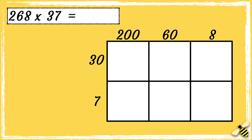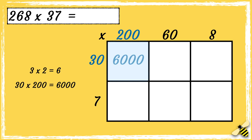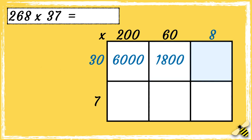Now that we're set up, we're ready to multiply. If you have a pen and paper to hand, pause the video and have a go at working out the answer — write your answer in the comment section below. Let's start with 30 multiplied by 200. I know that 3 times 2 is 6, so 30 times 200 is 6000. Now we can work out 30 times 60 — I know that 3 times 6 is 18, so 30 times 60 is 1800. Next, we need to work out 30 times 8 — I know that 3 times 8 is 24, so 30 times 8 is 240.